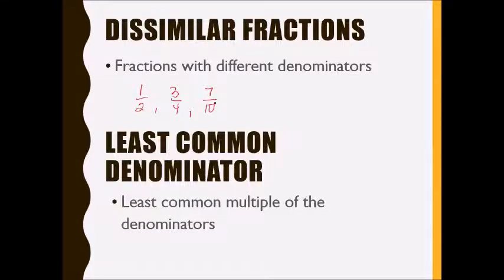Another thing you should know is that dissimilar fractions can be expressed as similar fractions. This is where the least common denominator comes in. The least common denominator is the least common multiple of our denominators. It's the smallest common multiple of the given denominators. For example, if we have two, four, and ten, let's use them as our example.